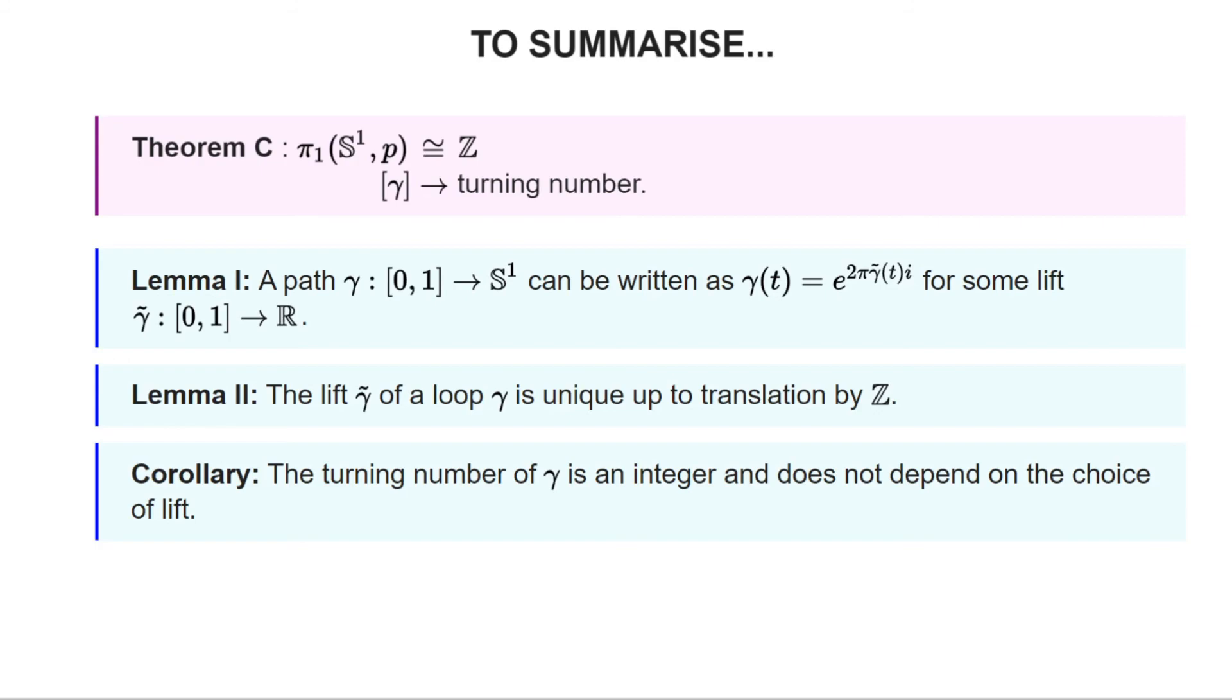That brought us then to Lemma 3, which is basically a restatement of Theorem C. One half of the lemma we could just prove by picture. Namely, if we have two loops and they have the same turning number, then they must be homotopic. This followed from the fact that we could construct an explicit homotopy between their lifts. Both Lemma 1 and the hard part of Lemma 3 are consequences of a more general statement called the homotopy lifting property. We will be looking at this very soon. This concludes the sketch of proof of Theorem C and also the video. So thanks a lot for watching, take care, and all the best!